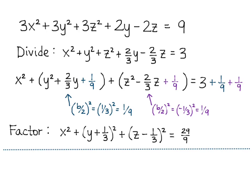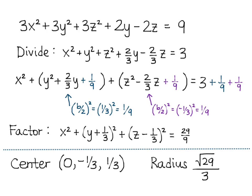Now we pull out the center and radius. The center is (0, −1/3, 1/3) — notice it's the opposite sign of what you see in the parentheses, directly from our formula. The radius is the square root of the right-hand side: √(29/9) = √29 / 3. That's how you find the center and radius of a sphere: get it into standard form by completing the square, then read off the center and radius.